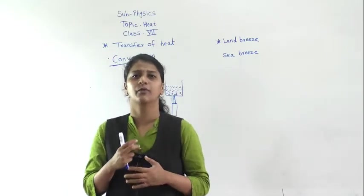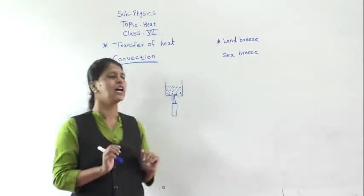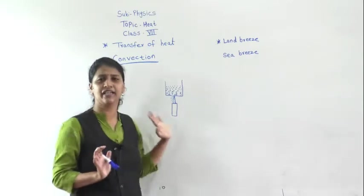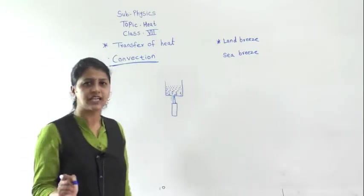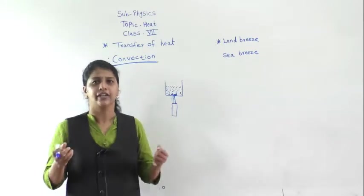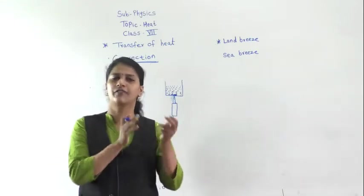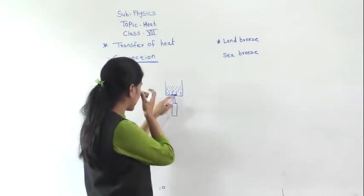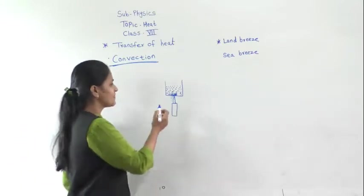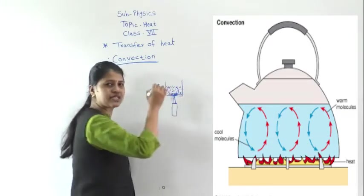For example, if you want to heat water, you need a burner or some heating material. Once the heating material is kept, the water at the bottom will get heated first. You know that once a material is heated it expands — we have learned the concept of expansion and contraction. So the bottom part gets heated, it expands, it becomes lighter, and because it becomes lighter it will rise up.